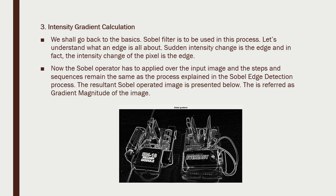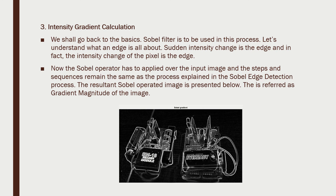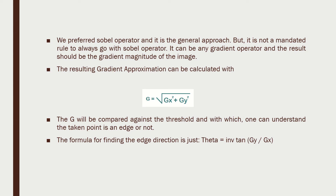The third step is intensity gradient calculation, which uses the Sobel filter. I send the image into the Sobel filter and collect the output. A sudden intensity change is the edge, and intensity change is what we are looking for. We use the Sobel operator to detect these edges. We know Sobel X and Sobel Y, and what we get finally is the gradient approximation G, calculated as the square root of Gx squared plus Gy squared.